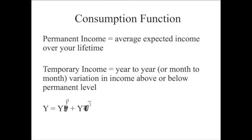Permanent income is your average expected income over your lifetime. You look at your average earnings, form beliefs about raises you'll get, when you'll retire and have no income, and arrive at your average expected income over your lifetime — that's your permanent income. In any given year you won't earn exactly that average; you might be below average because you got laid off for six months, or above average because you got a huge bonus. Those deviations would be temporary income, and temporary income can be negative.